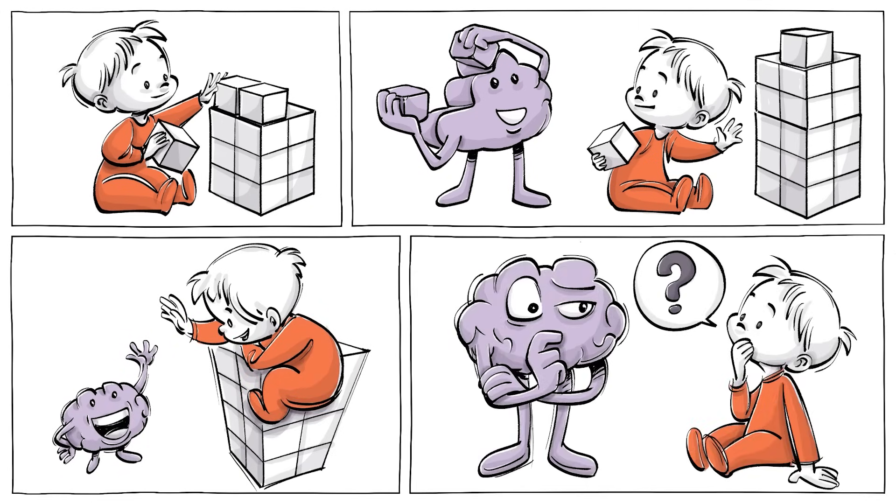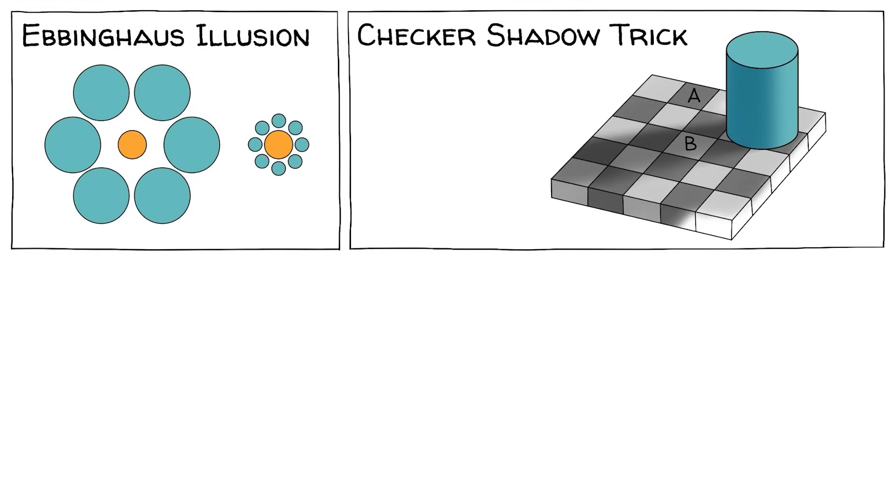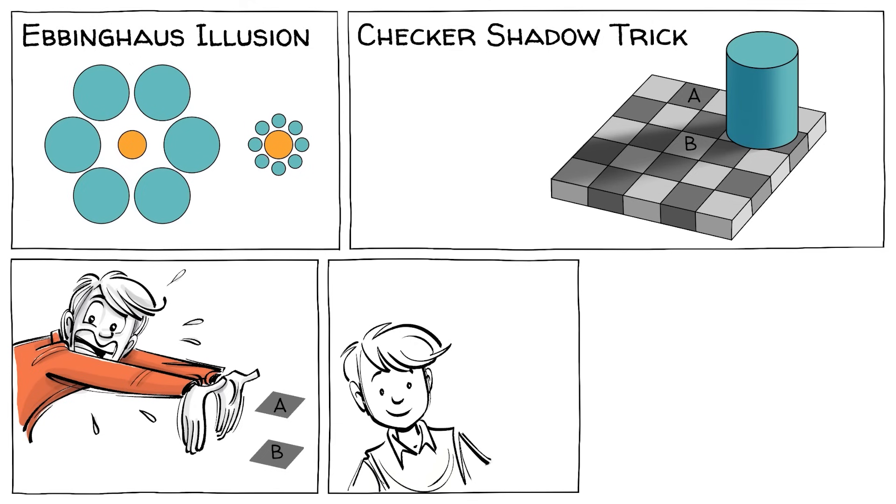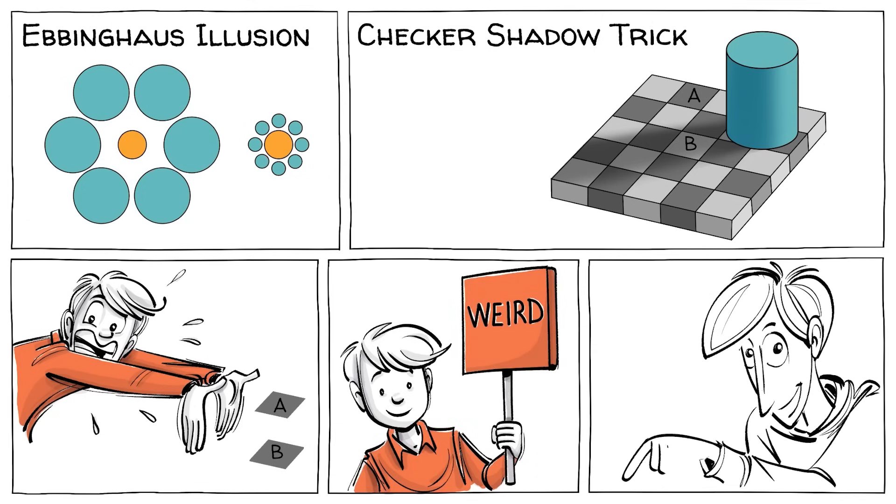But some questions remain. What explains the Ebbinghaus illusion? And what's behind the checker shadow trick, where two squares appear to be different shades of grey but are exactly the same? Or don't you see that? And if not, is that because you aren't WEIRD? Tell us your thoughts and experiences in the comments below.